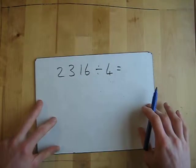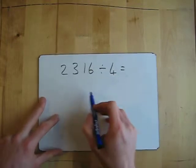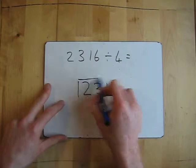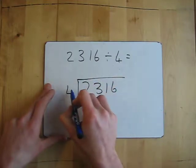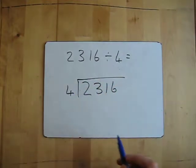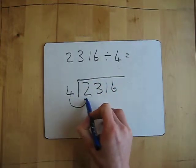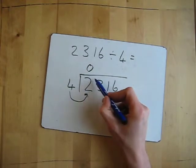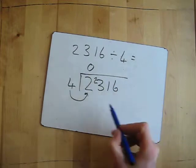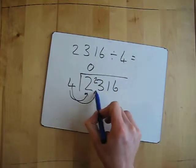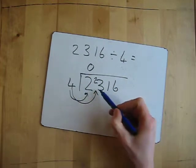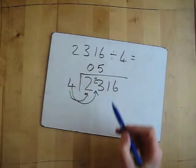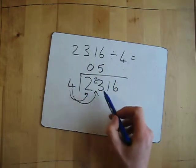So 2,316 divided by 4. 2,316 — the first number goes underneath the bus stop, divided by 4. So again, 4: how many times does it fit into 2? It doesn't fit in the 2. What's left over? The 2 is left over, so we carry the 2. Next number — how many times does 4 fit into 23? It goes 5 times. What's left over? 5 times 4 is 20, so from 23 there'd be 3 left over.